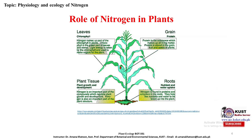Now, the role of nitrogen in plants. Nitrogen has a very important role, both structurally and functionally in plants. In leaves, nitrogen is a very important part of chlorophyll — the green part of the leaves and stems. Light energy is taken up by the chlorophyll and used to make sugars for the plant.